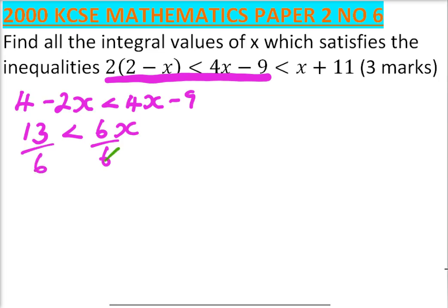When you do that, 6 divided by 6 is 1, and 13 divided by 6 is 2 and a half. So less than x. That is the first part. Now we solve the other part.